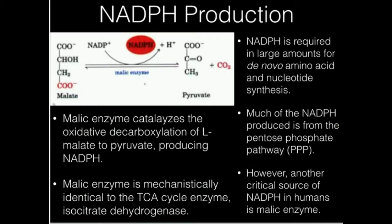We're taking malate out of the TCA cycle and oxidatively decarboxylating it to form NADPH. And also that pyruvate can then go and be oxidized again by pyruvate dehydrogenase, go into the TCA cycle and so on, and get more energy out of it. This is just a way to get some of the energy off in the form of NADPH.